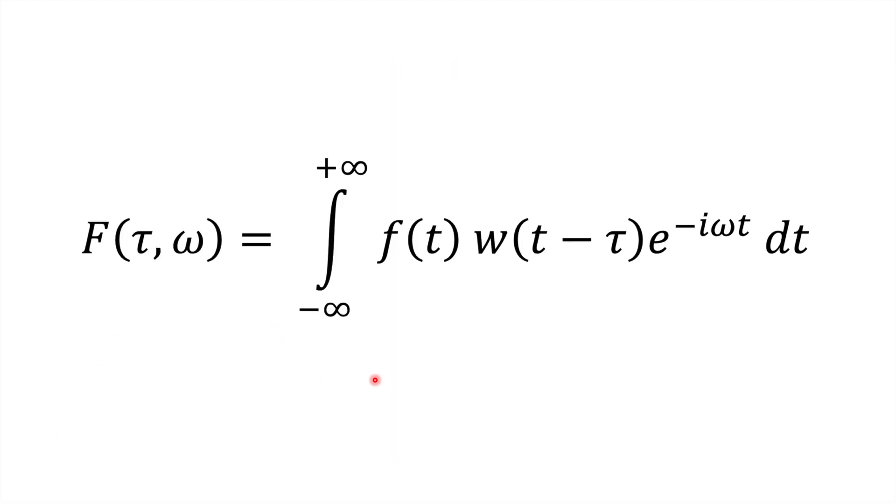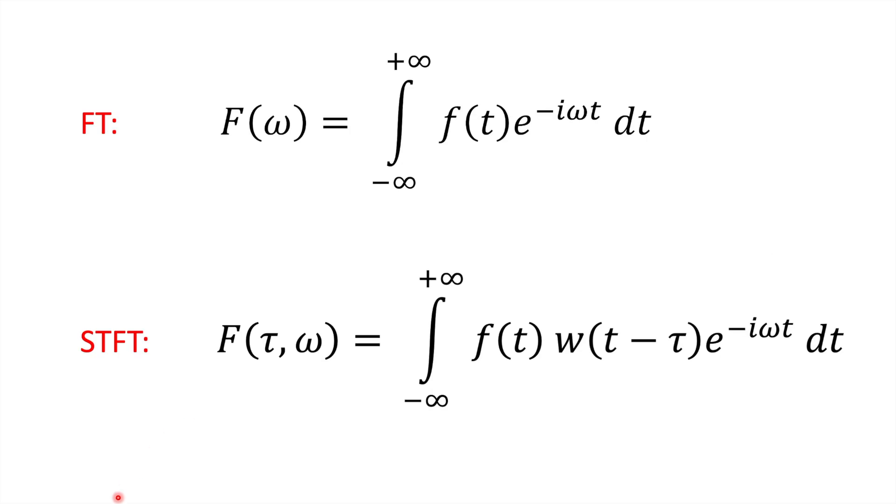This is what it looks like mathematically. W is our window function, which can be translated through time via our translation parameter, tau. Comparing the STFT to the Fourier Transform, the only difference is the window function. The signal is multiplied by the window function, and then we take the Fourier Transform. But now the output involves some time localization. The Fourier Transform only provided frequencies. We now have frequency and time localization.